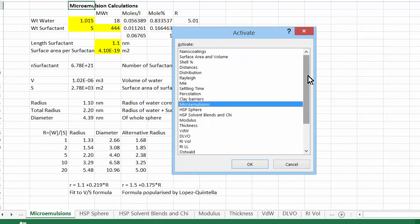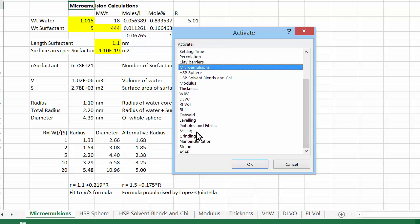There are many other workbooks in the spreadsheet. You've seen some of them: surface area volume, shell percent. Here's one on microemulsions. We have something on measuring modulus. We have things on pinholes or fibers, milling, grinding. Lots here. It's all free. And we hope you'll explore it. Good luck.